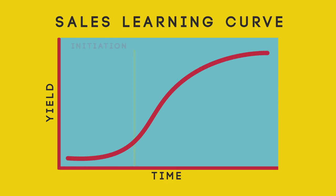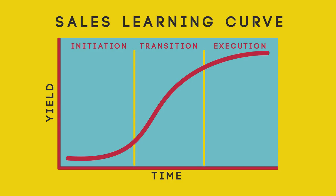The three phases are called the initiation phase, the transition phase, and the execution phase. Every company wants to try to get to the execution phase as quickly as possible.